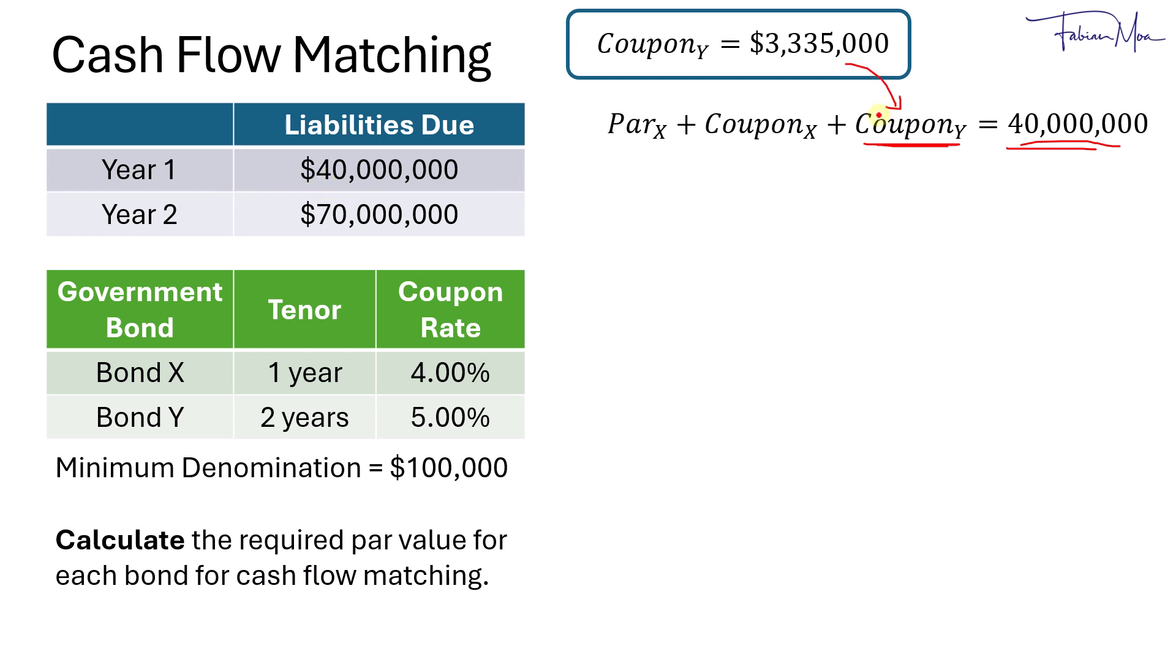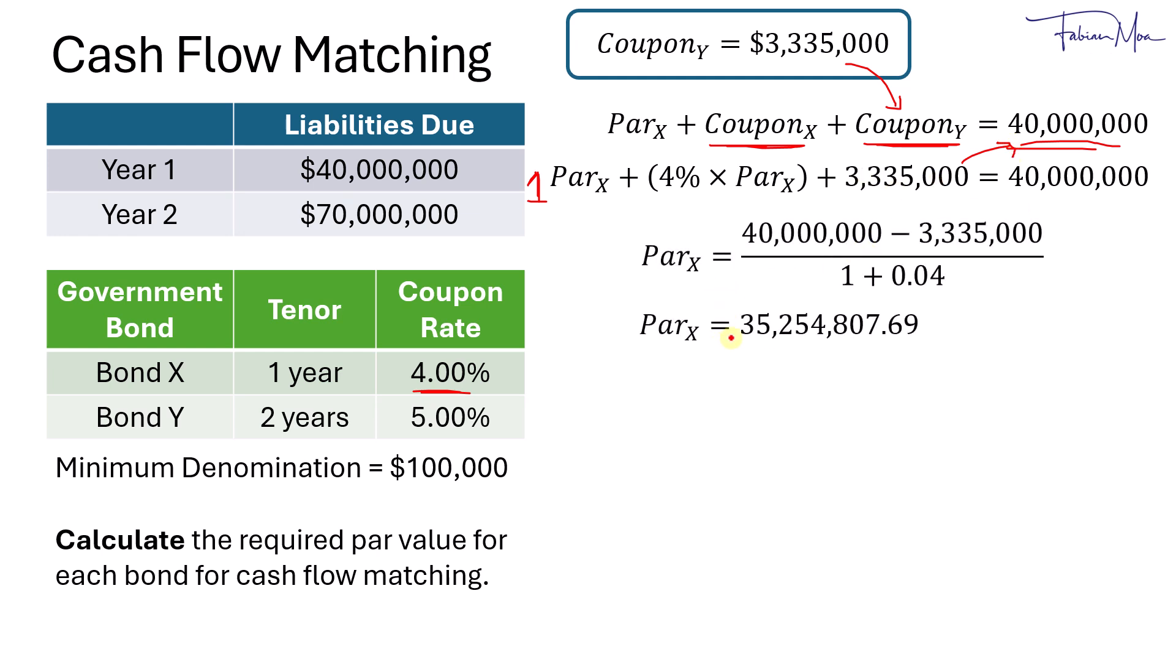We know that the coupon for bond Y is $3,335,000. And for the coupon of bond X, we would take 4% of its par value. So on the first two terms, we have 1 plus 1 unit, 1 plus 4%. And we'll move 3.335 million over to the right. And we'll get a par value of $35,254,807.69. And for this case, the number is 200,000 in this case. So we'll round up to 300,000. So that's $35,300,000 for the par value of bond X.